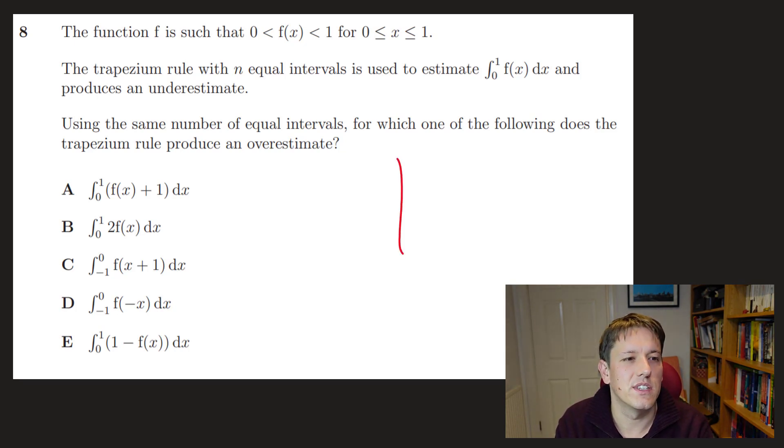And think about it in more detail if something doesn't work. But so let's just sketch an example of a possible function here. So it's got to sit entirely in this square 0, 1 by 0, 1. And the trapezium rule would give an underestimate. And so the simplest thing I can think of is a curve that just looks like this. If I, say, used just two intervals here, I would definitely get an underestimate with the trapezium rule. Right. So here's my example function. Now I just scan down this list.